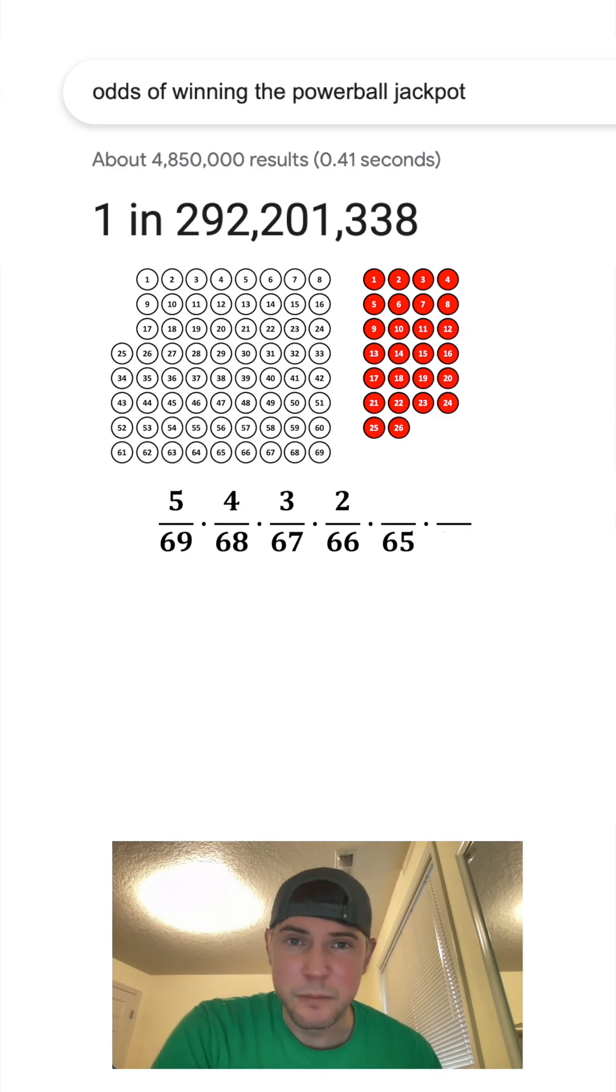And then out of the last 65 balls, we have to choose the 1 remaining winner. And then we multiply all that by the probability of us choosing the exact Powerball that's going to win and that's 1 out of 26.